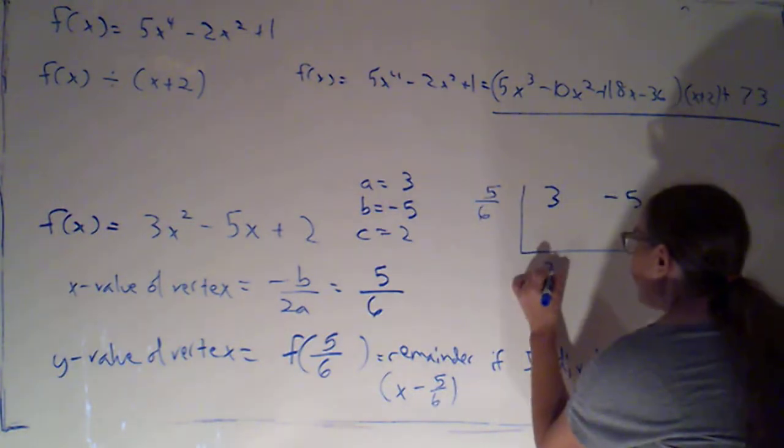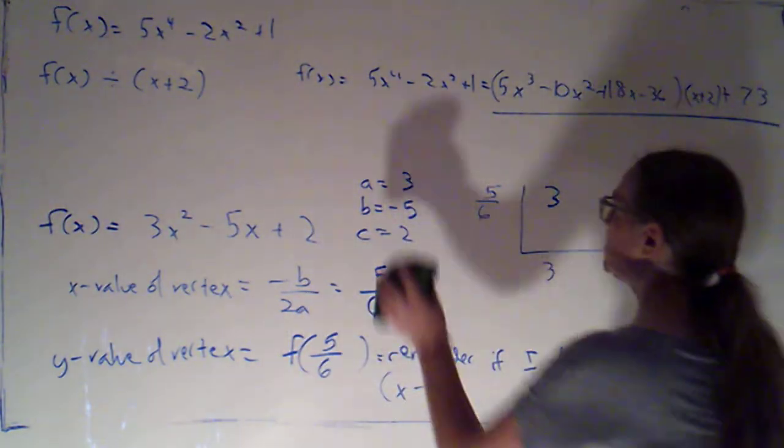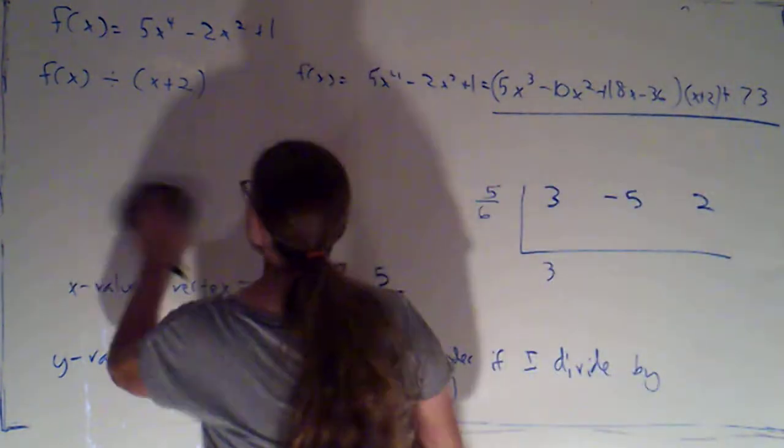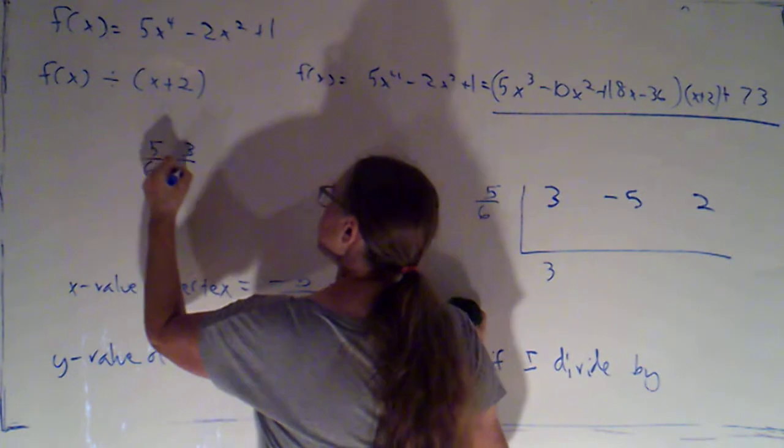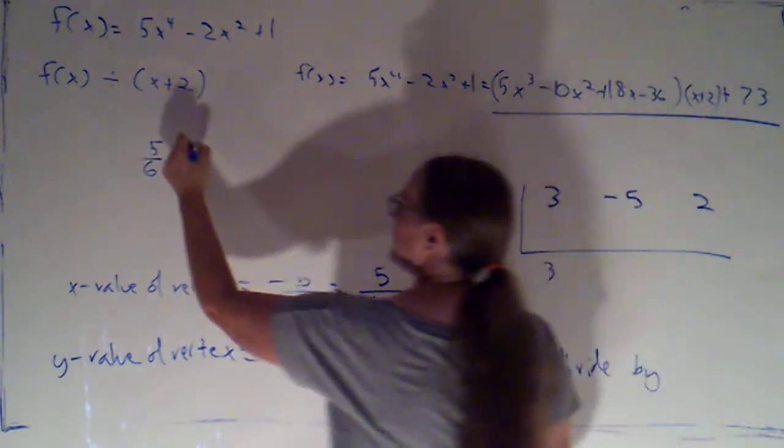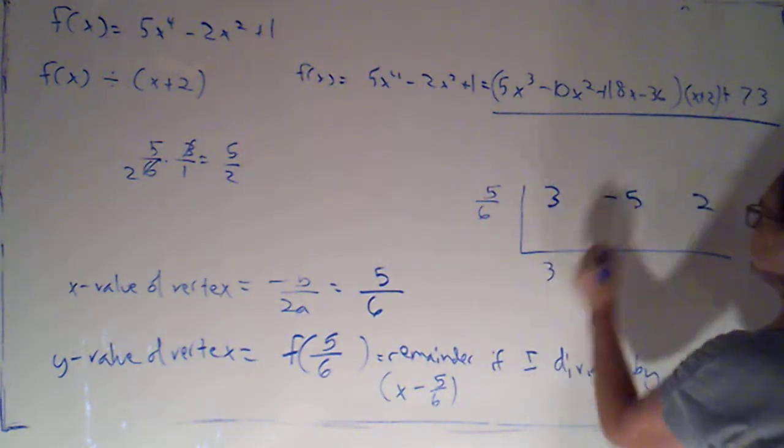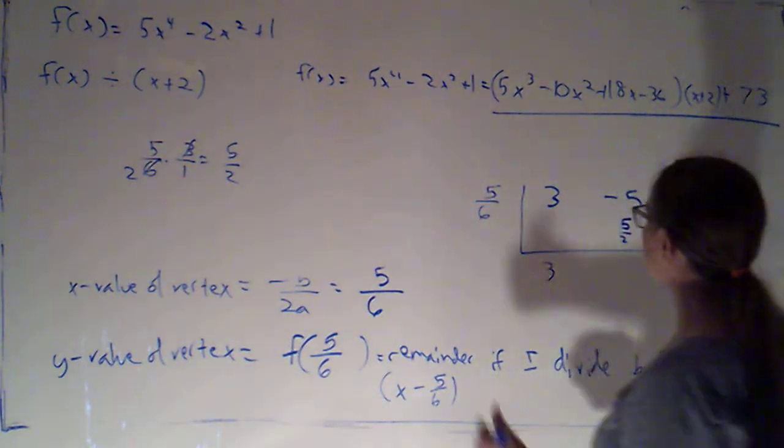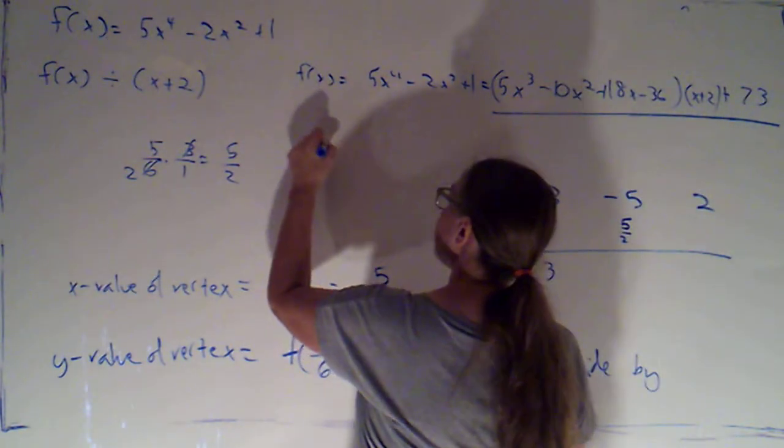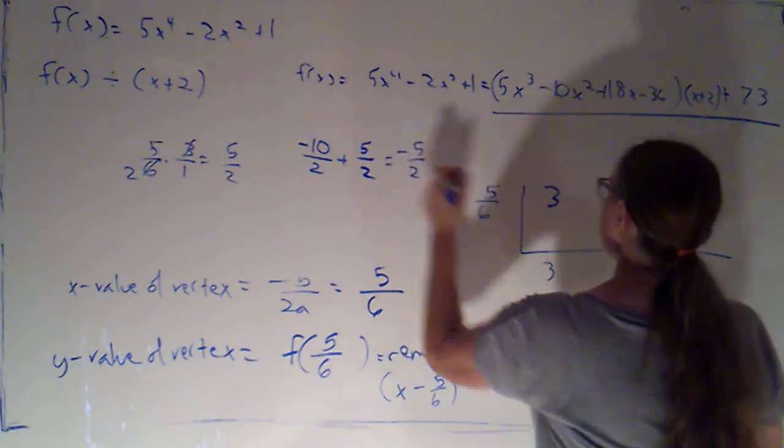So now I would bring down the 3 and we've got to multiply. Now since we are working with fractions, I might choose to write that out off to the side. We've got 5 sixths times 3 over 1. That 3 will cancel. I'm going to get 5 halves. So 5 halves. Now I do have to add some fractions. I've got negative 5, which is the same as negative 10 halves, plus 5 halves. That's going to give me negative 5 halves.